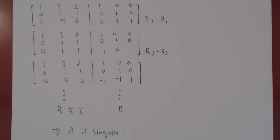This is how you find the inverse — or determine it doesn't exist — for any square matrix, simply using row reduction, keeping in mind the shortcut formula for the 2 by 2 case discussed in our previous video.